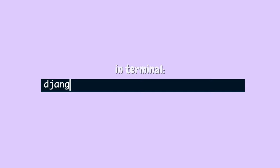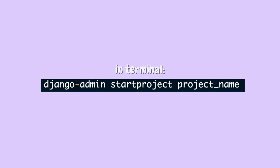Starting a Django project is actually super easy — it's just one line in your terminal. Open up terminal, cd into the folder where you want your project stored, and then type django-admin startproject followed by whatever you want your project name to be. After you run this, a folder gets created with all of the necessary files for a Django project — pretty cool.